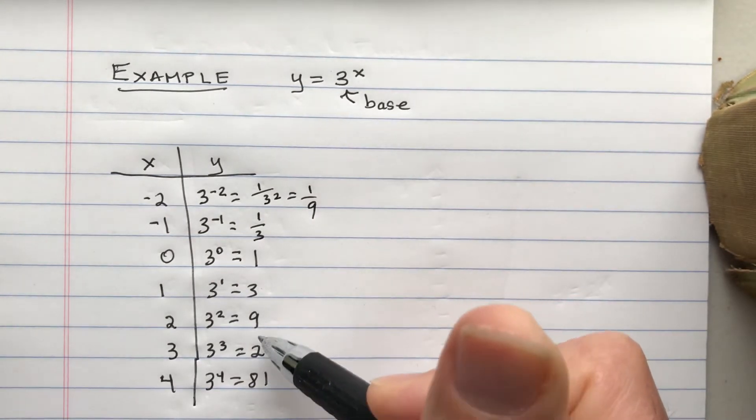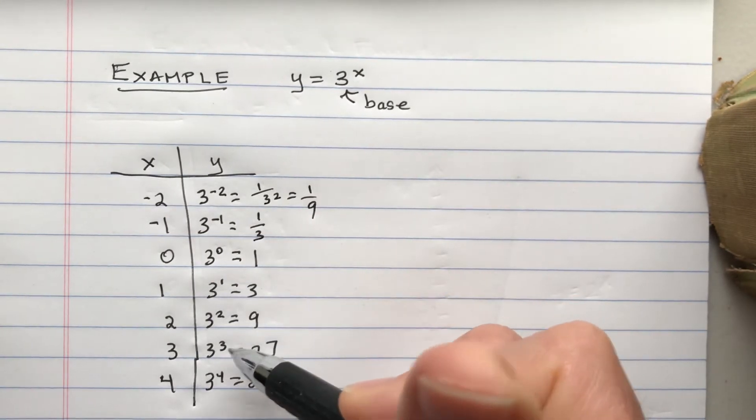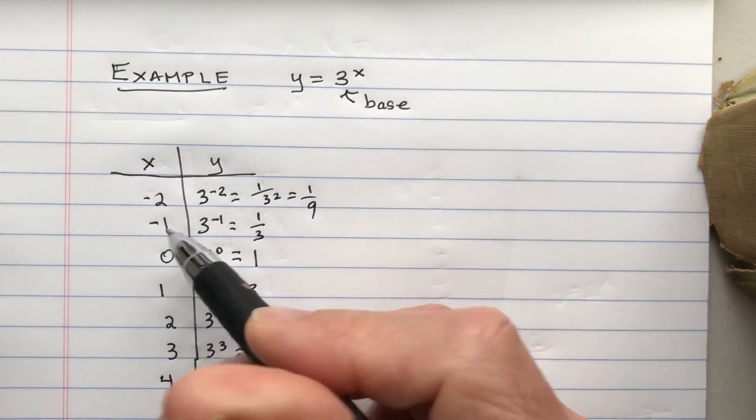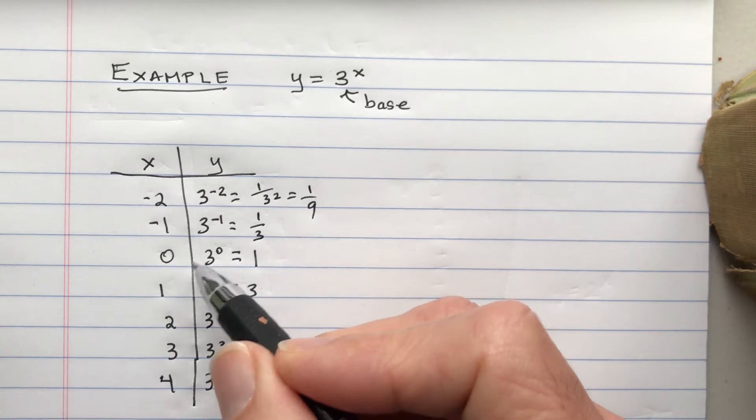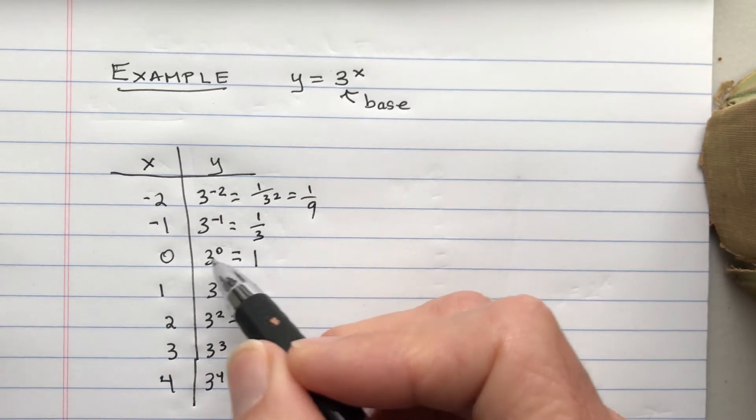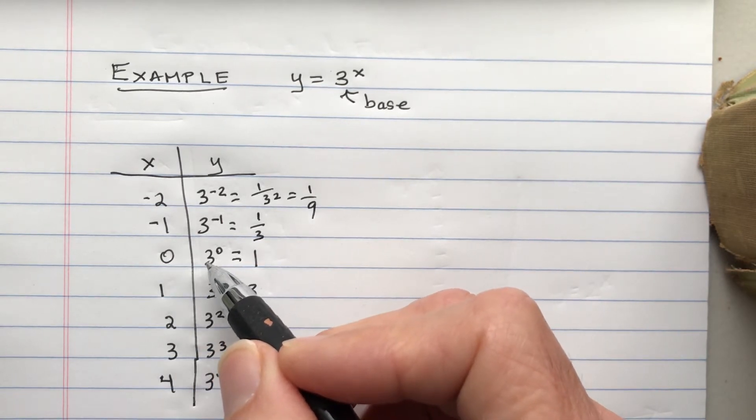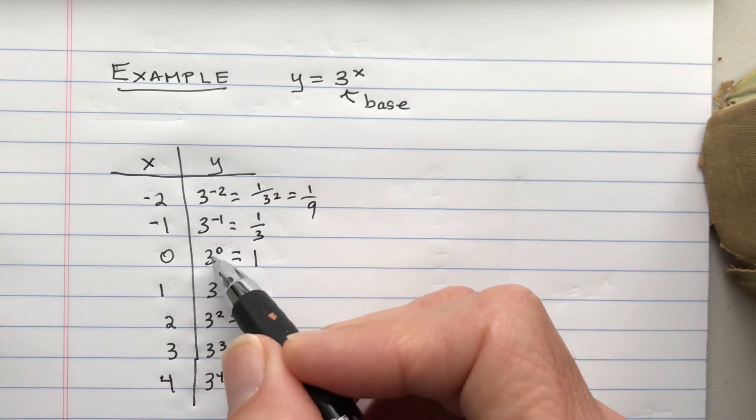So as we go the opposite way, what I mean is as x decreases, we divide y by 3. And again, 3 to the 0 is 1. It doesn't matter what the base is. Whatever number to 0 power is 1.